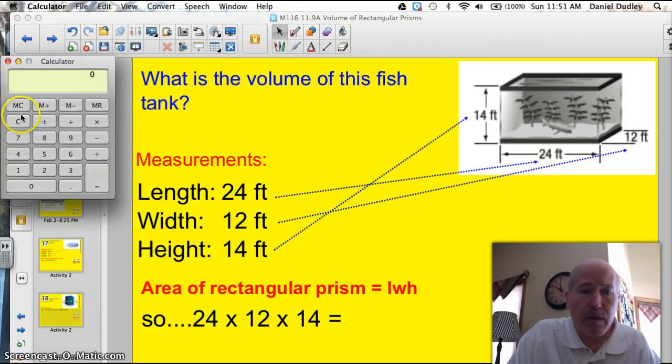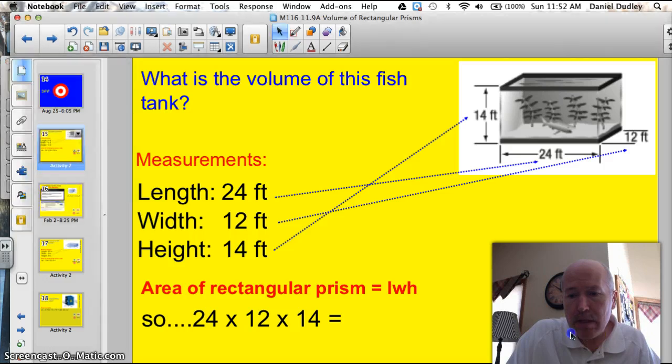Let me grab my calculator. 24 times 12 times 14, and you get 4,032 feet. So I'm going to put that up here, grab it out of my hiding spot. 4,032 feet, and I'm done, right? Wrong. 4,032 feet cubed.